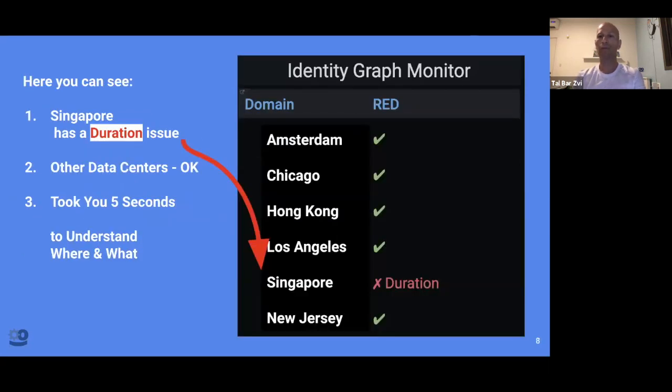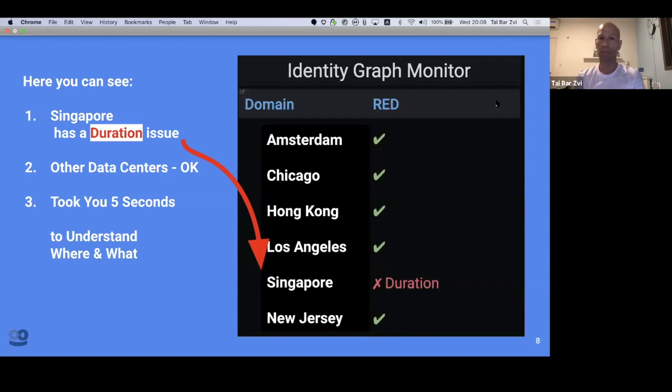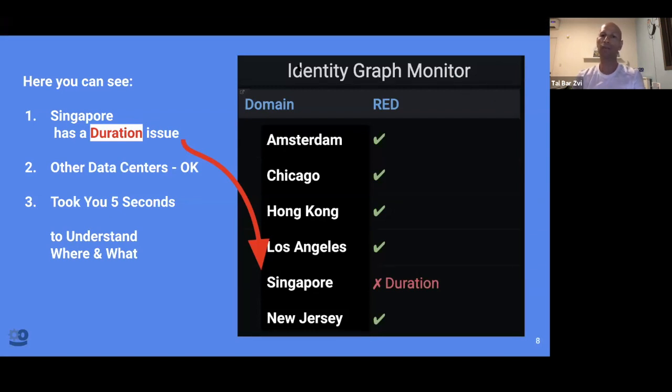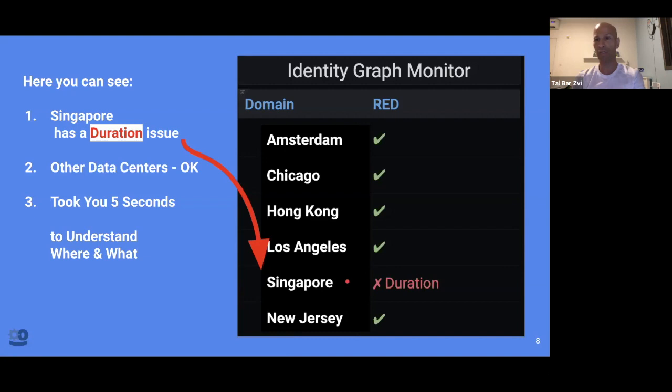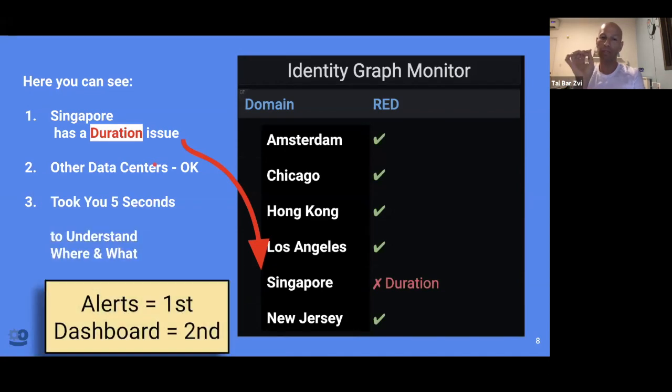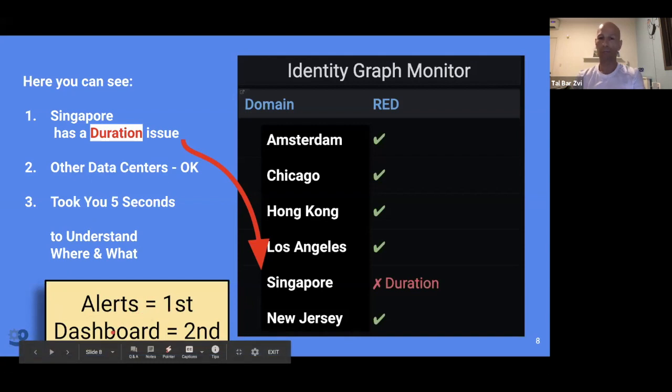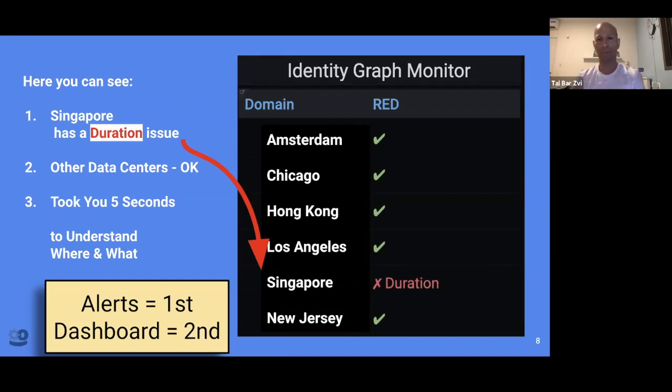So this is a real life example from one of my dashboards. You can see here the identity graph. I have a monitor and it took you around five seconds to see that there is a duration issue in Singapore. So the D in Singapore is, we have an issue with the D in Singapore and all other data centers are okay. And I just want to reiterate that now more than ever alerts come first, dashboards and everything comes second. All it's as a troubleshooting aid because we're not in front of monitors anymore. We're at homes waiting for the alerts to come.